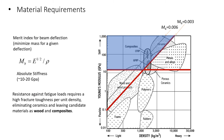In this plot, Young's modulus versus density of different materials have been shown. Resistance against fatigue loads requires a high fracture toughness per unit density, eliminating ceramics and leaving candidate materials such as wood and composites. The merit index for beam deflection — minimize mass for a given deflection — is given by the formulas shown here.